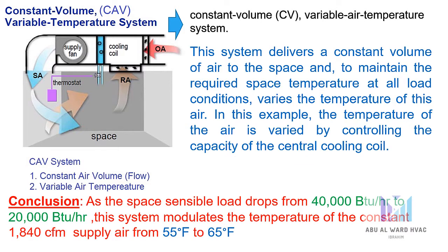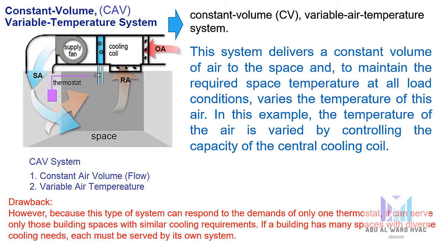As the space sensible load drops from 40,000 BTU to 20,000 BTU, the system modulates the temperature of the constant 1,840 CFM supply air from 55°F to 65°F. The drawback is that this type of system can respond to the demands of only one thermostat, so it can serve only buildings with spaces that have similar cooling requirements. If a building has many spaces with diverse cooling needs, each must be served by its own system.